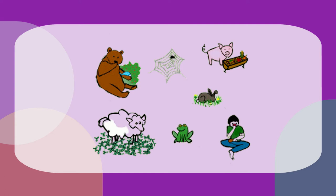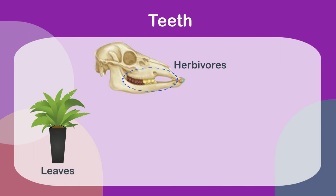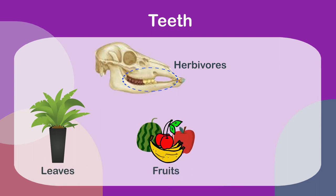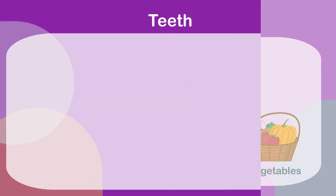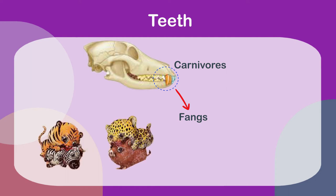Let's learn about some of these special features of animals. Teeth: herbivores have a set of flat teeth which helps them grind leaves, fruits, and vegetables. Carnivores have a set of sharp teeth with especially long and pointy canine teeth known as fangs. These fangs help them kill other animals and tear their meat.